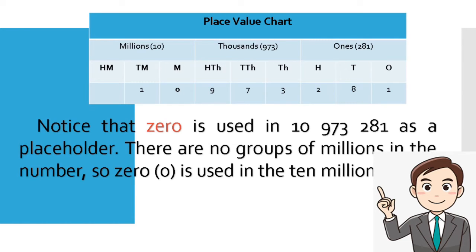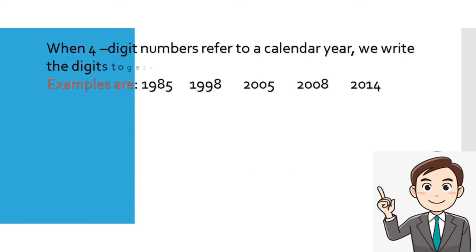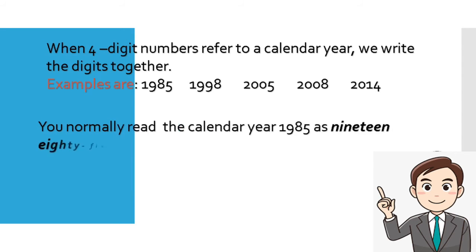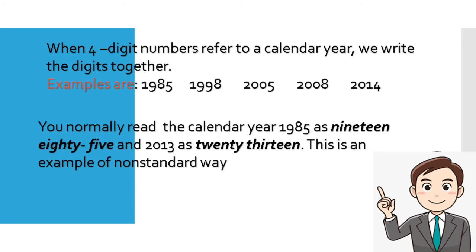When four-digit numbers refer to a calendar year, we write the digits together. Examples are 1985, 1998, 2005, 2008, and 2014. You normally read the calendar year 1985 as nineteen eighty-five and 2013 as twenty thirteen. This is an example of non-standard way.